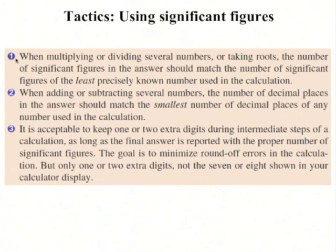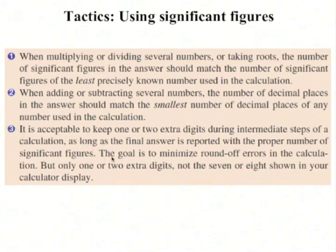When using significant figures, keep in mind three rules. When rounding a final answer obtained by multiplying or dividing, the number of significant figures in the answer should match the number of significant figures of the least precisely known number in the calculation. When rounding a final answer found from adding or subtracting, the number of decimal places in the answer should match the smallest number of decimal places in the calculation. Thirdly, don't round too early — only round your final answer, not intermediate steps.